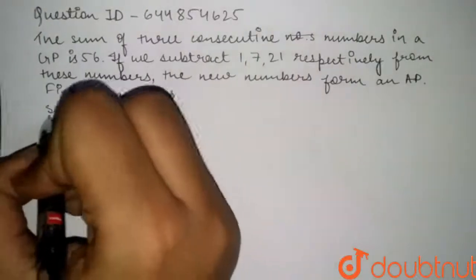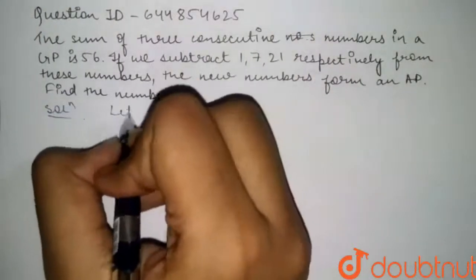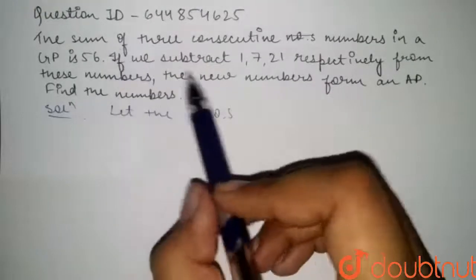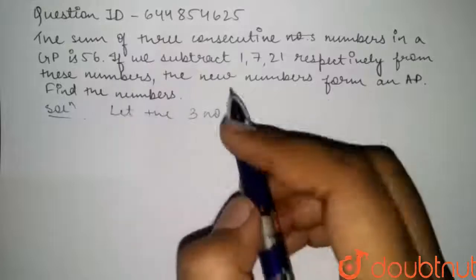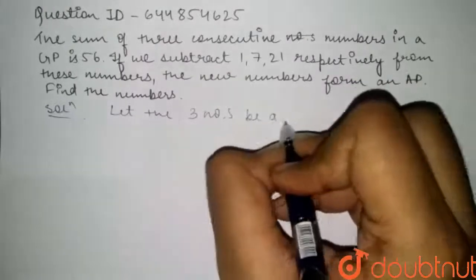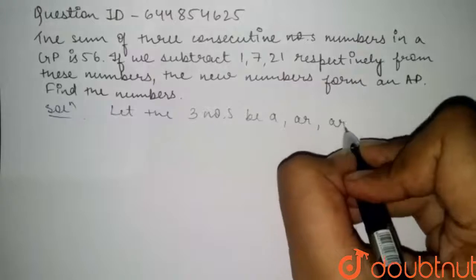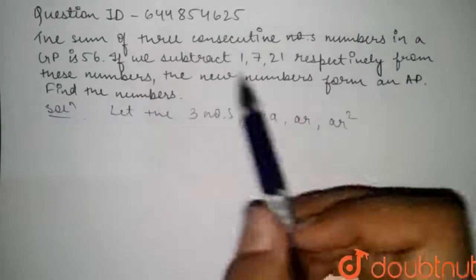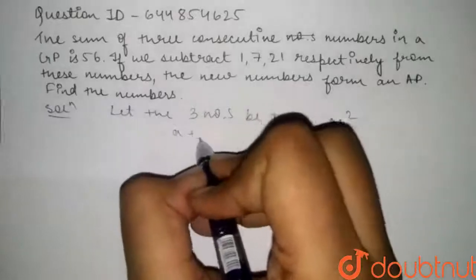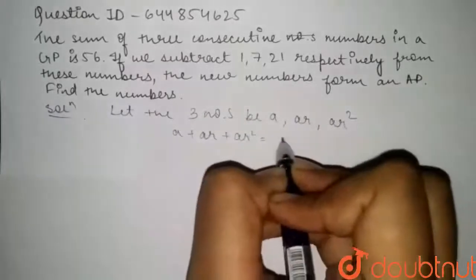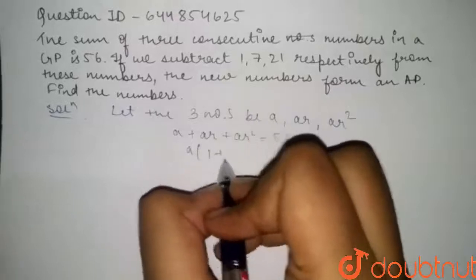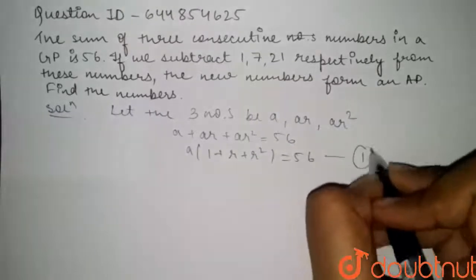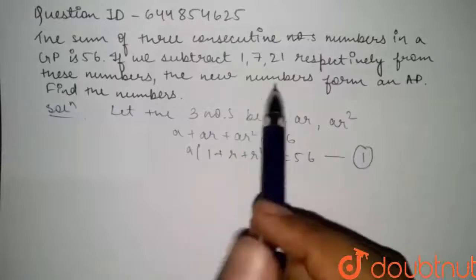Solution: Since the numbers are in GP, let the three numbers be a, ar, and ar². It is also given that the sum of three consecutive numbers in a GP is 56, so a + ar + ar² = 56, which gives a(1 + r + r²) = 56. Let's call this equation number 1.